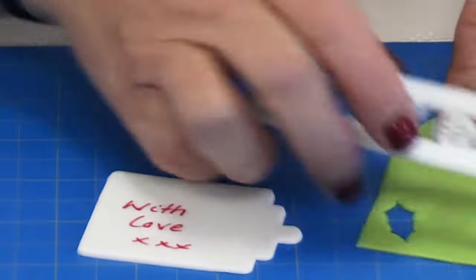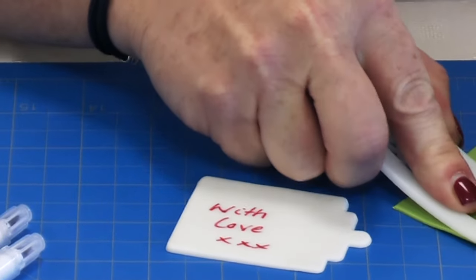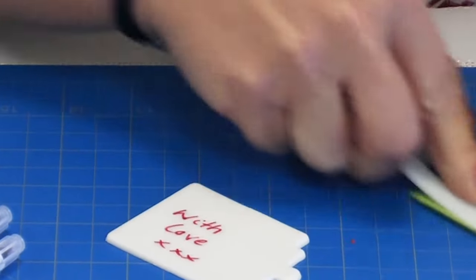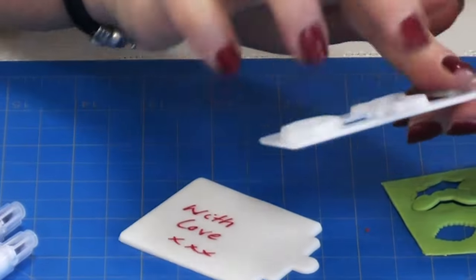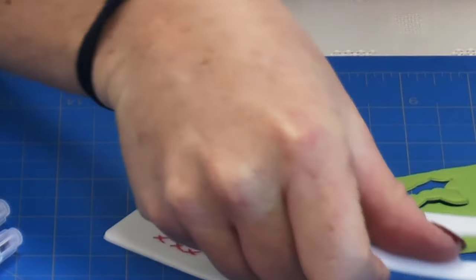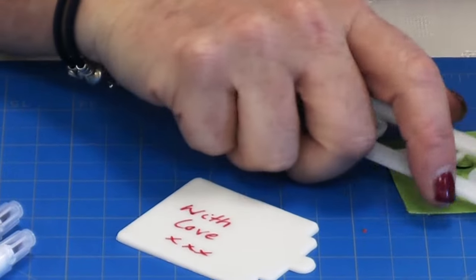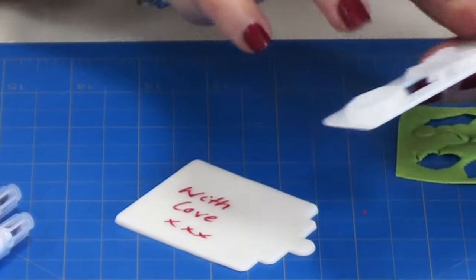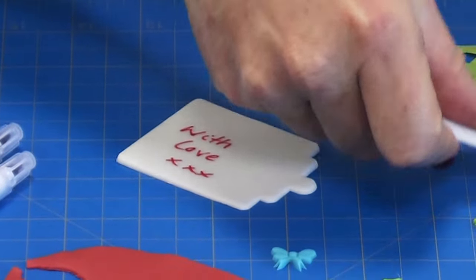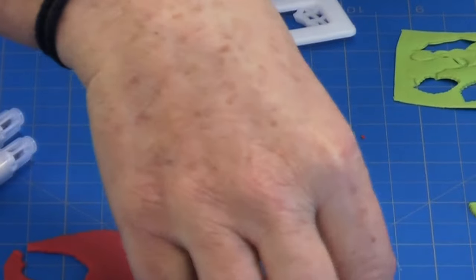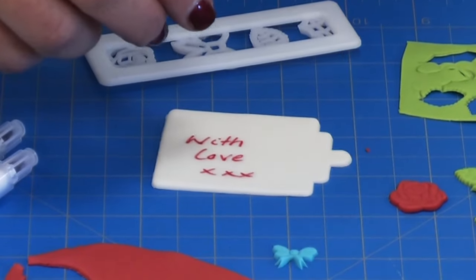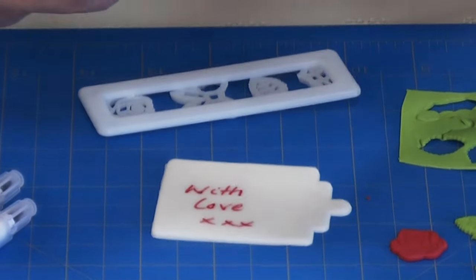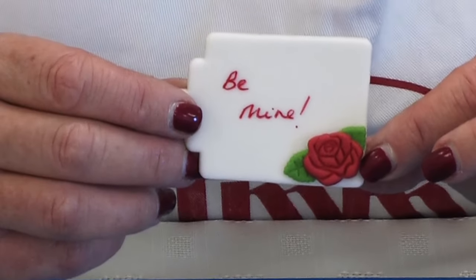Cut out a couple of rose leaves. All you would do is attach them to your gift tag with water or edible glue. Here's one that I made earlier.